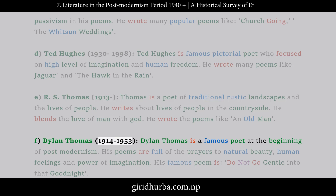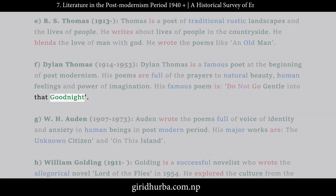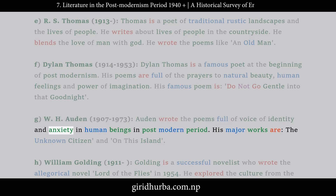F. Dylan Thomas (1914–1953): Dylan Thomas is a famous poet at the beginning of postmodernism. His poems are full of prayers to natural beauty, human feelings, and power of imagination. His famous poem is Do Not Go Gentle Into That Good Night. G. W.H. Auden (1907–1973): Auden wrote poems full of voice of identity and anxiety in human beings in the postmodern period. His major works are The Unknown Citizen and On This Island.